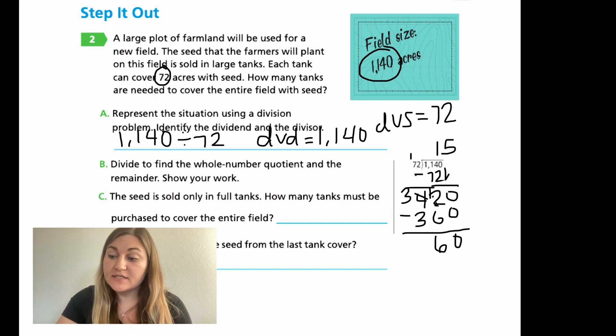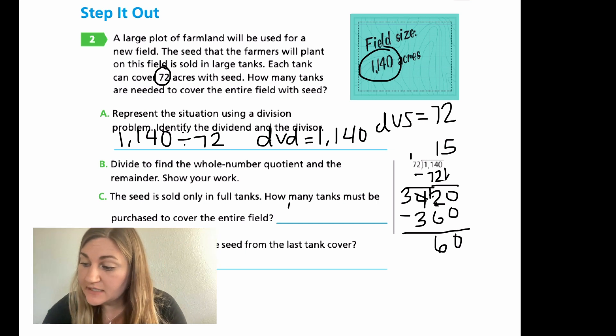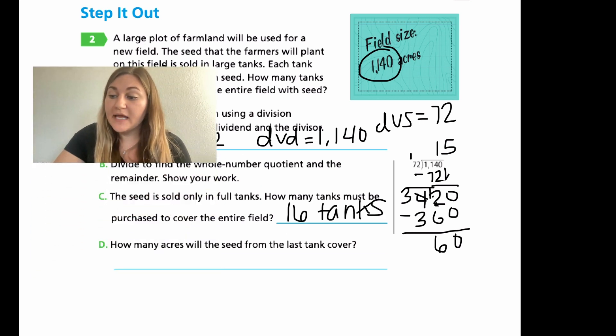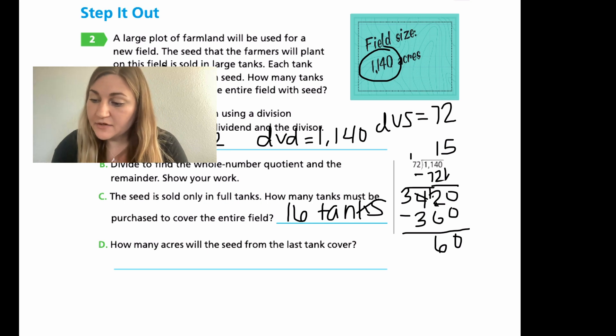Now that we have our answer of 15 with our remainder of 60, we can answer question number C. The seed is sold only in full tanks. How many tanks must be purchased to cover the entire field? We can't just buy 15 tanks because we have 60 left over. So we have to round up one, and we have to purchase 16 tanks to make sure the entire field is covered. And then how many acres will the seed from that last tank cover, the extra one that we had? Our remainder was 60. So it'll cover those 60 acres.